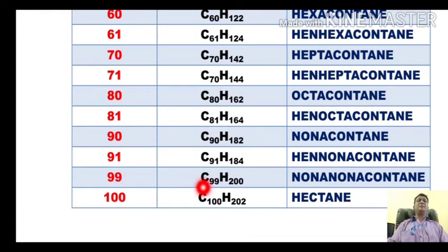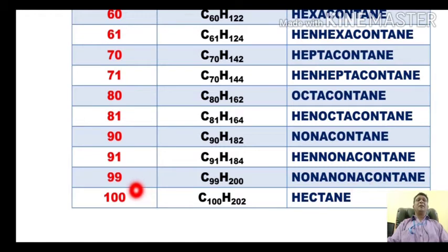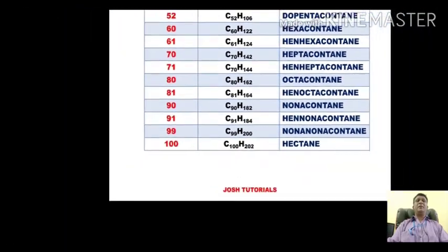For the alkane containing ninety carbons the name is nonacontane; for ninety-one carbons it is hennonacontane. For the alkane with ninety-nine carbons the name is nonanonacontane. The alkane with one hundred carbons in a straight chain is called hectane — 'hect-' is taken from the word 'hectare', which represents the dimension of 100 by 100.